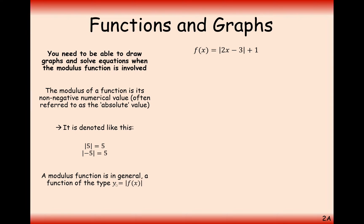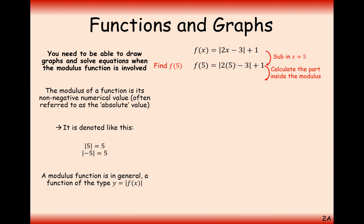We're going to look at graphs of the type y equals modulus f of x. But first we're going to look at substituting some numbers into a modulus expression. Here we have f of x equals modulus of 2x minus 3, close modulus, plus 1. We're going to substitute in the value 5. Replace x with 5, work out what's inside the brackets first. We get 10 minus 3 is 7. Modulus of 7 is 7 because it's already positive. Add the 1 and you get 8.